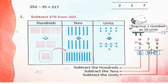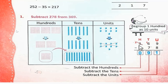369 से 278 को minus करें। 9 minus 8 = 1। अब 6 से 7 minus नहीं होता, इसलिए हम यहाँ से 100 borrow करेंगे। जब हम 100 borrow करेंगे तो यह 3 के बजाए 2 रह जाएगा और यह 16 हो जाएगा। 16 minus 7 = 9। 2 minus 2 = 0। So the answer is 91.